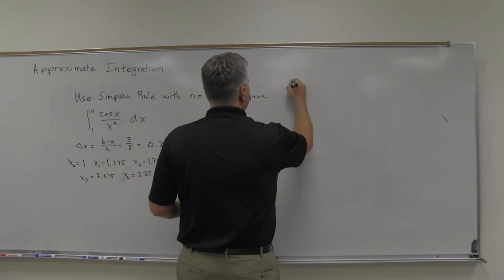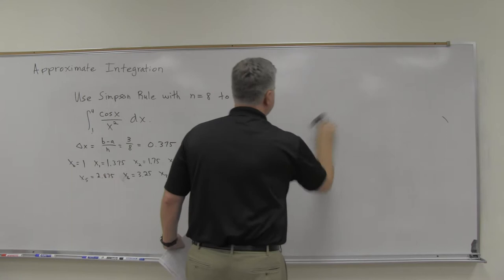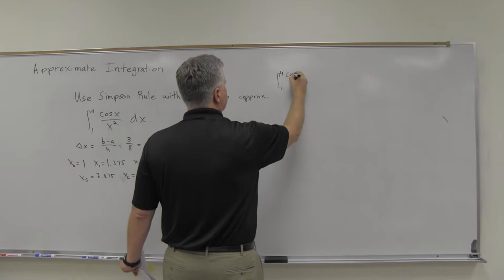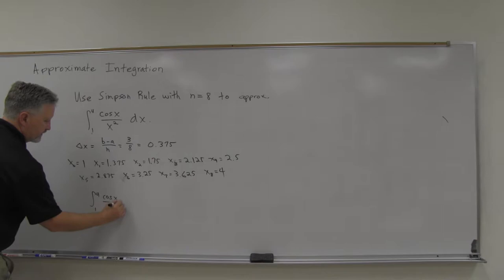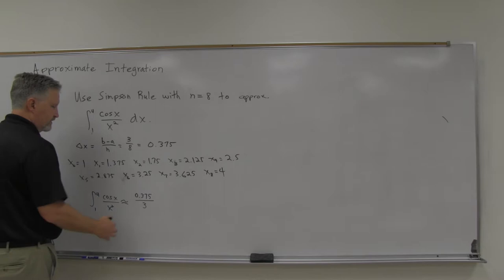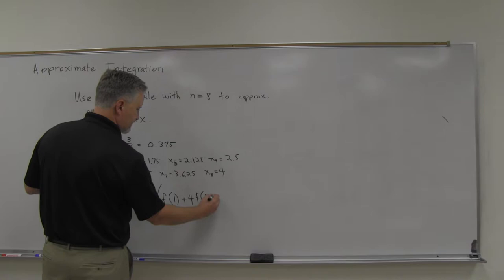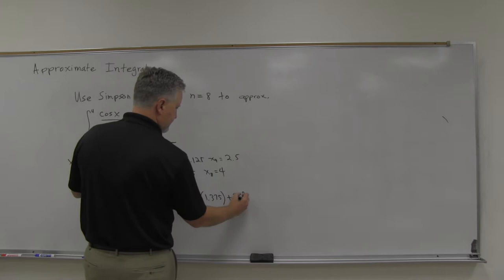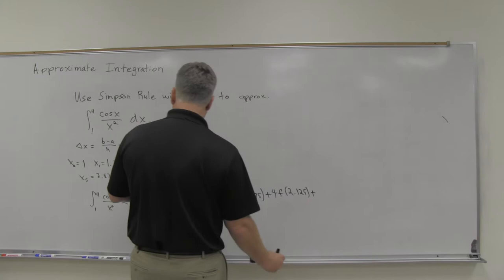So by Simpson's rule, the integral from 1 to 4 of cosine x over x squared with n equals 8 is approximately equal to delta x over 3 — so 0.375 divided by 3 — times f of x0, so f of 1, plus 4 times f of x1, so f of 1.375, plus 2 f of x2, so 2 f of 1.75, plus 4 f of x3, so 4 f of 2.125, plus 2 f of x4, so f of 2.5.